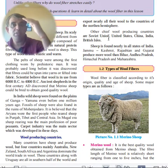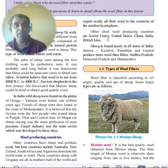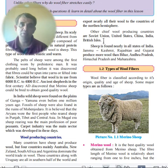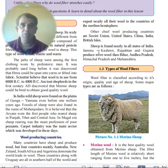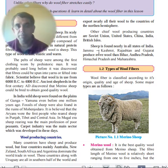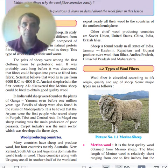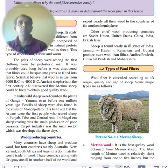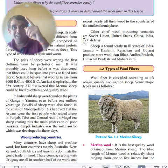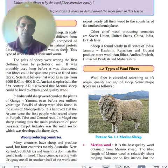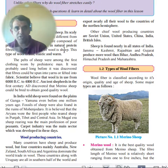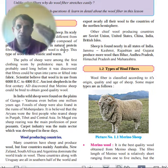Other wool-producing regions include Russia, the US, China, India, and the British Isles. In India, major wool-producing states are Jammu & Kashmir, Rajasthan, and Gujarat, as these are colder regions. Bihar, Andhra Pradesh, Himachal Pradesh, and Maharashtra also produce wool, though in lesser quantities.